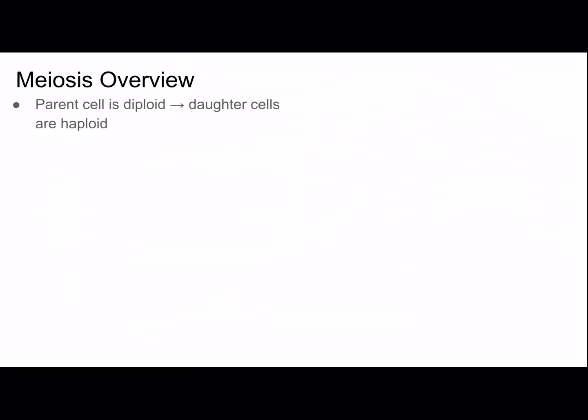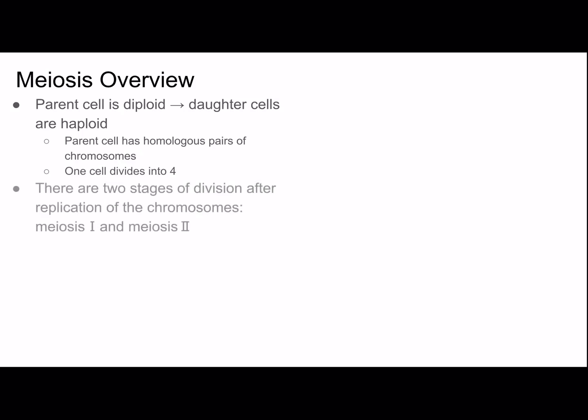Now for an overview of meiosis. The parent cell is diploid, but the daughter cells are haploid. The parent cell has homologous pairs of chromosomes, and one cell will divide into four. There are two stages of division after replication of the chromosomes: meiosis I and then meiosis II. We need these two stages of division in order to take a diploid cell and make it haploid.